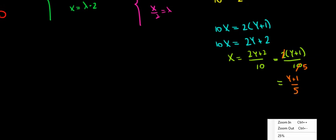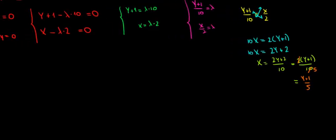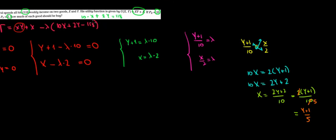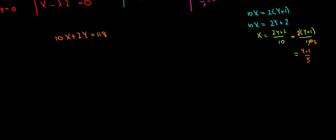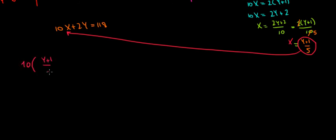Now recall that we have the budget constraint. Let me just zoom out to go to it. And then we'll substitute it. What was it? Here and somewhere here. There it is. 10x plus 2y equals to 118. Let's just write it below and we'll work here. 10x plus 2y is equal to 118. Now let's substitute our x into the budget constraint. So let me just show it. This x, this is the x value. We substitute it over here. So we have now 10 times y plus 1 divided by 5 plus 2 times y is equal to 118.